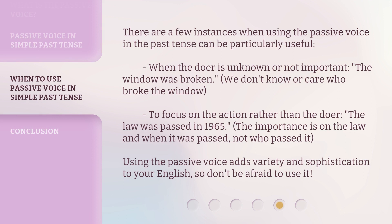There are a few instances when using the Passive Voice in the Past Tense can be particularly useful. When the doer is unknown or not important: 'The window was broken' — we don't know or care who broke the window. To focus on the action rather than the doer: 'The law was passed in 1965' — the importance is on the law and when it was passed, not who passed it. Using the Passive Voice adds variety and sophistication to your English, so don't be afraid to use it.